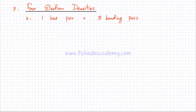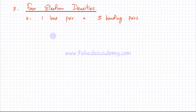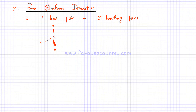Now we're going to do the next example of four electron densities, but this time we're going to have one lone pair and three bonding pairs. First, I'm going to describe the shape of the molecule when you had four bonds. Previously we discussed CH4, which had a tetrahedral shape, with one bond coming out of the page and one going into the page, and the angles were 109.5 degrees. Now we're going to have exactly four electron densities except one will be a lone pair instead of a bond.